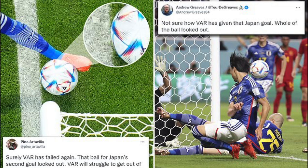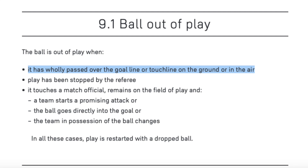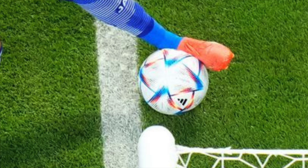The ball appears to be out of play when it is crossed for Tanaka to score, but we'll look at the laws of the game and still images to see that it was actually in play. The ball has to be completely out of play on the ground or in the air, and this includes the curvature of the ball.